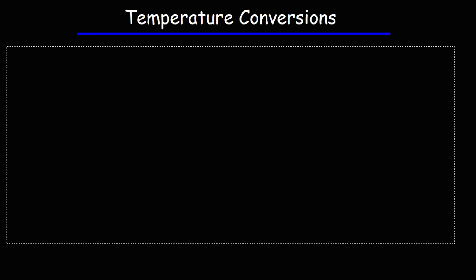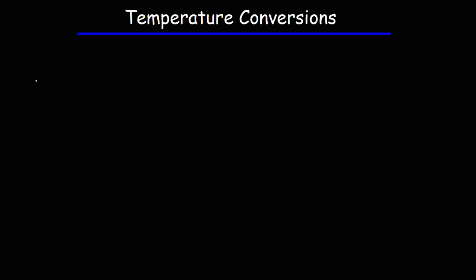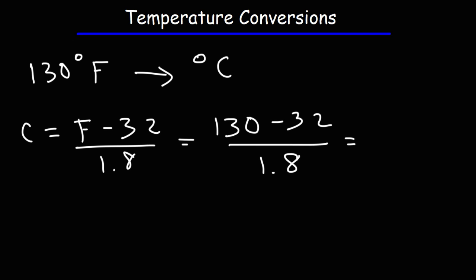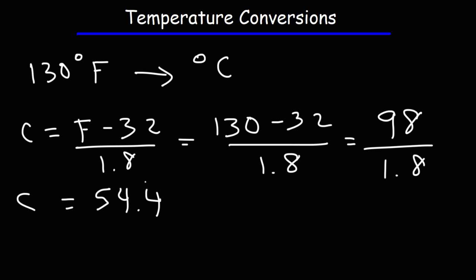Here's another example. Let's say we have a temperature of 130 degrees Fahrenheit — that's the temperature in a desert on a hot day. What is that in Celsius? Using the same formula, it's the Fahrenheit temperature minus 32, divided by 1.8. Replacing F with 130: 130 minus 32 is 98, and 98 divided by 1.8 gives a Celsius temperature of 54.4 repeating. So 130 degrees Fahrenheit is equal to 54.4 degrees Celsius.